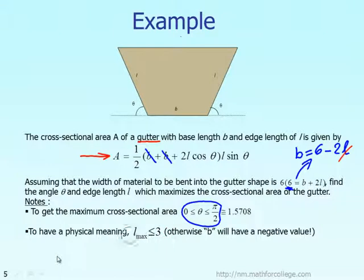So far, what we want to do is: because the material is constrained, B plus 2L equals 6. You can express B as 6 minus 2L, which makes the area of the gutter a function of L and theta. Keep in mind that for an optimum solution, by observation, theta should be between 0 and 1.57 radians, and the upper bound of L should be 3.